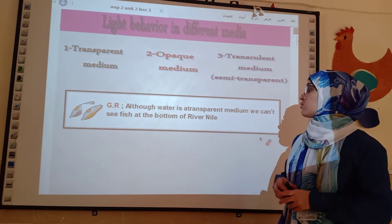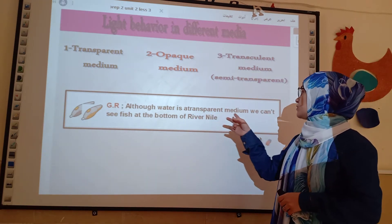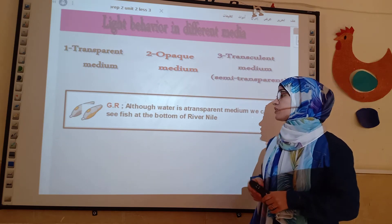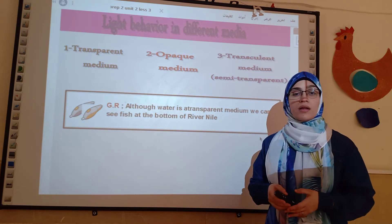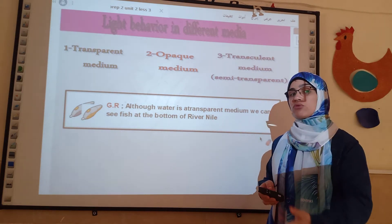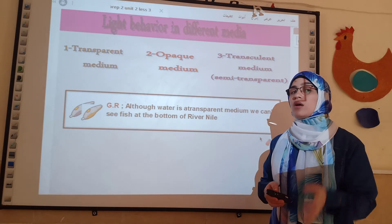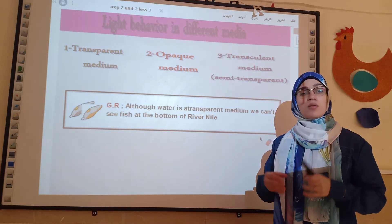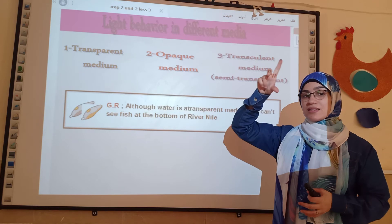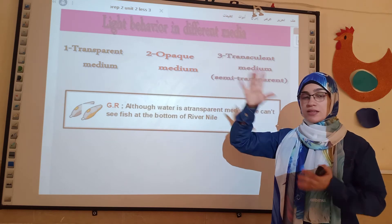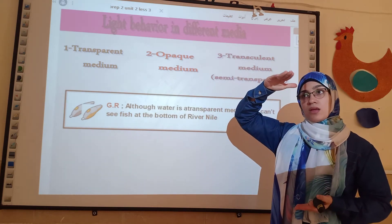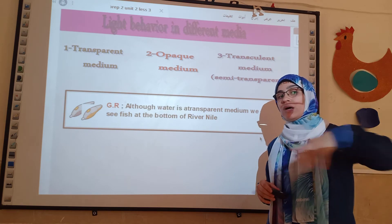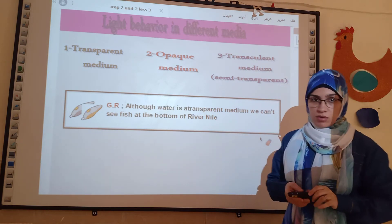Give reason: although water is a transparent medium, we cannot see fish at the bottom of a river. Why? Because as the thickness of the medium increases, the ability of light to pass through it decreases.